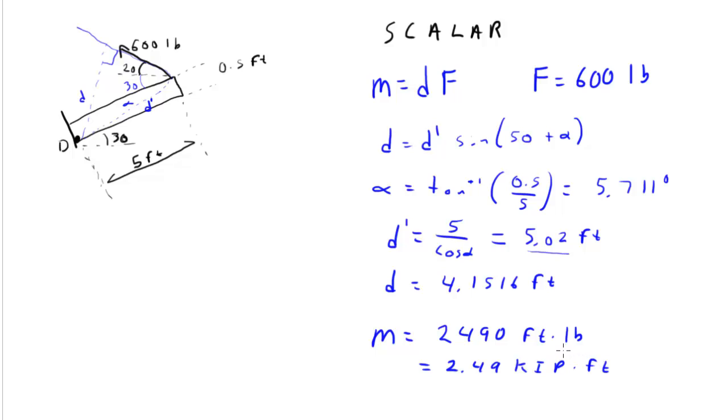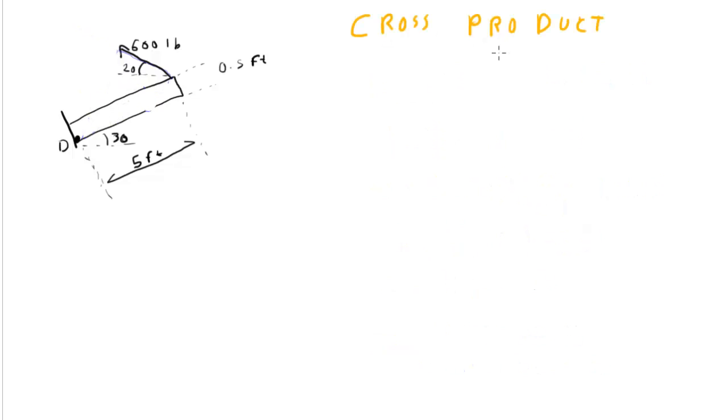I'd like to also work this problem using the cross product formulation. So give me a second and let me set that up. All right. So now we're going to do the cross product formulation. So to do that, we recognize that that formulation states that M is R cross F, where both R and F are written in Cartesian notation.